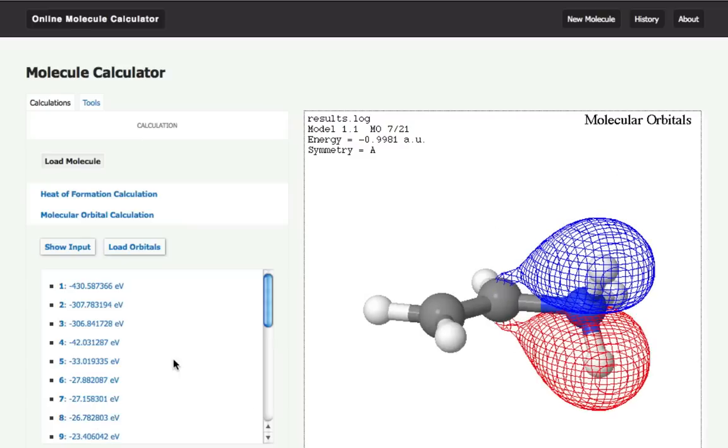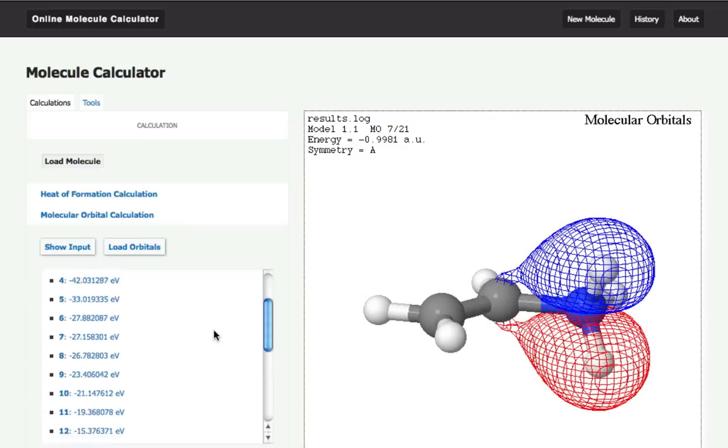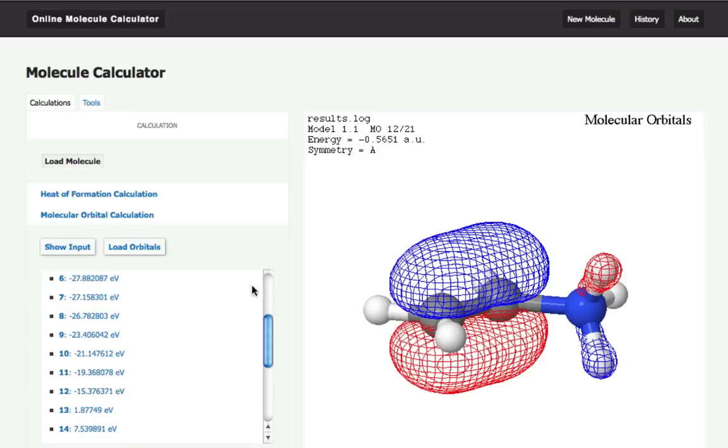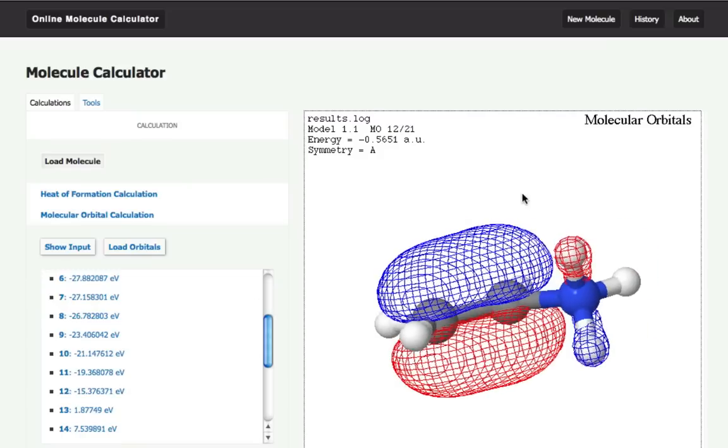I can scroll down. For example here, you can see the pi bond.